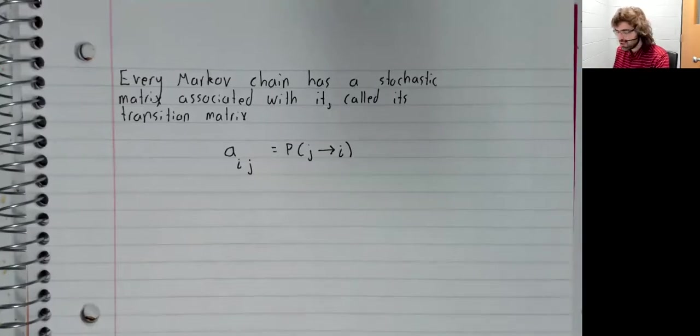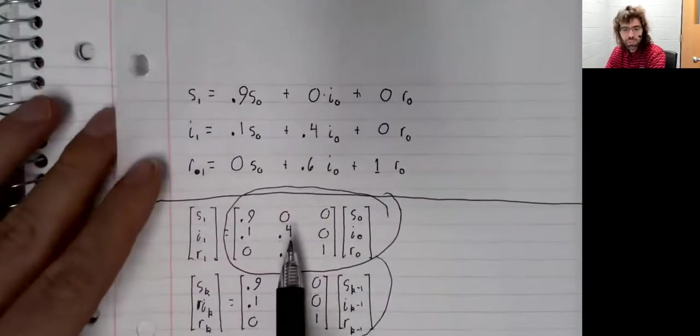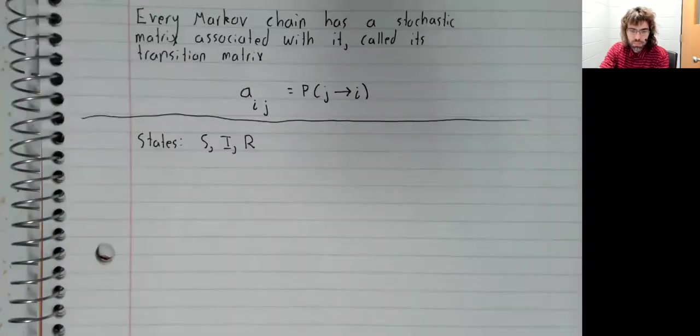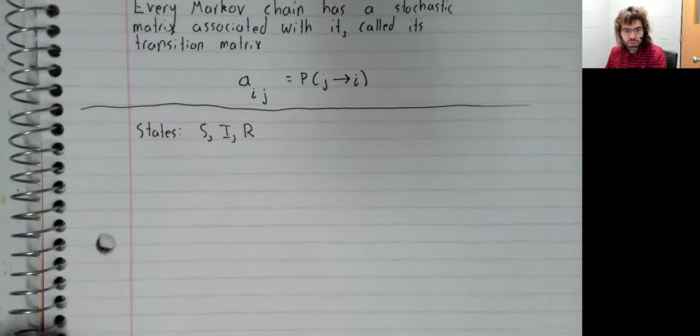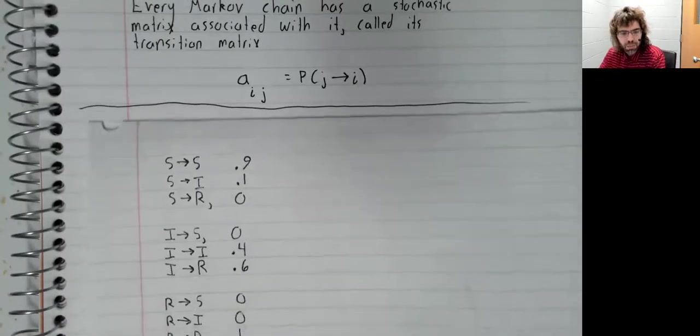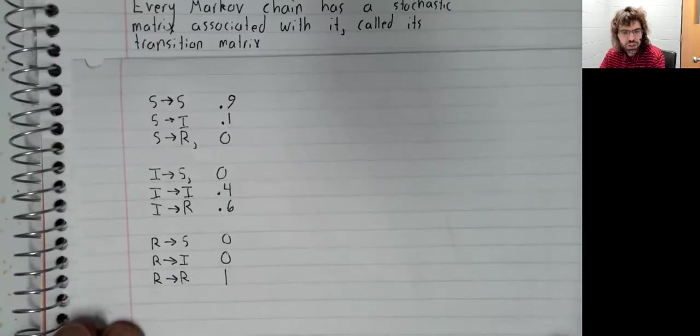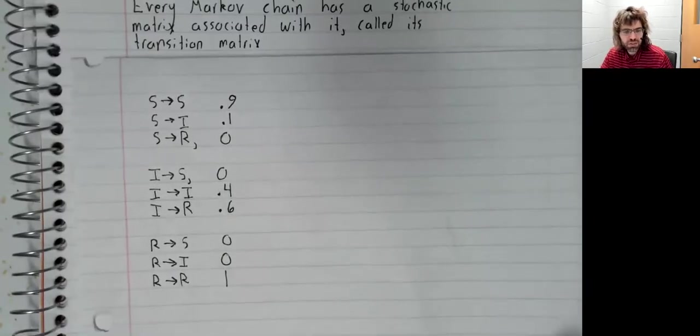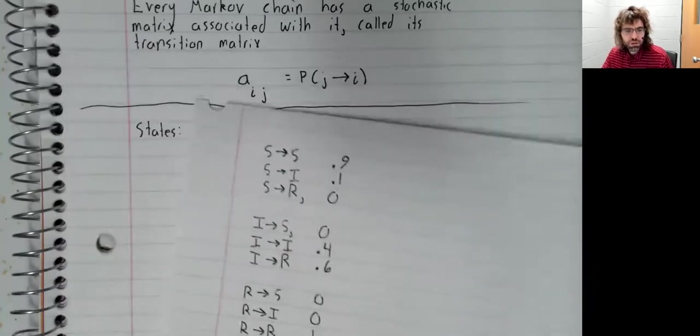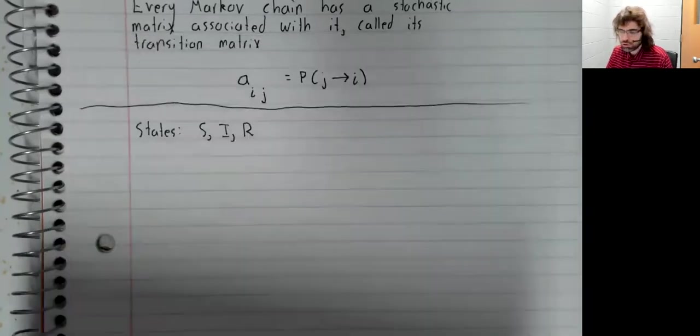Let's go back to this example. In this example, we have three states and the probabilities of transitioning between states. So let's set up the transition matrix.